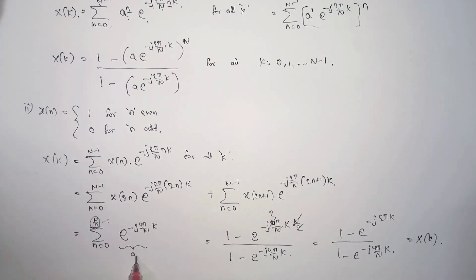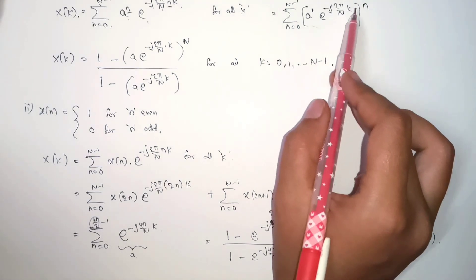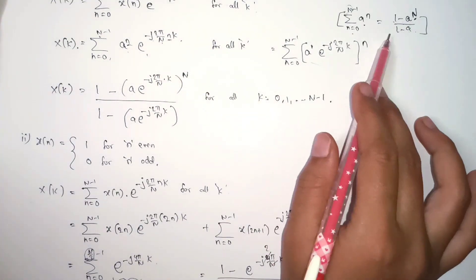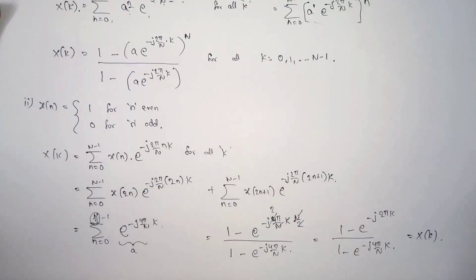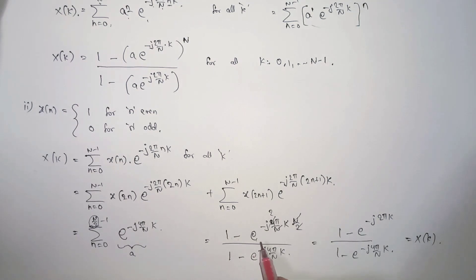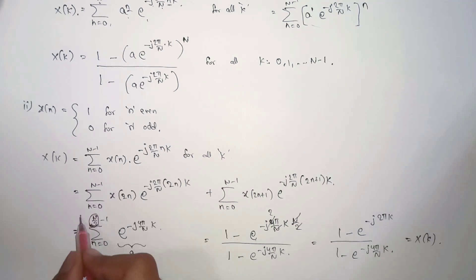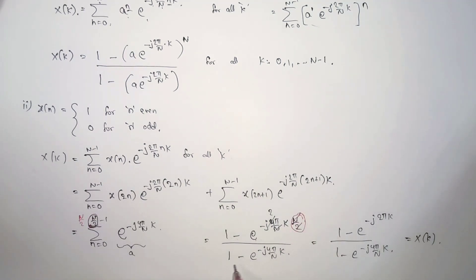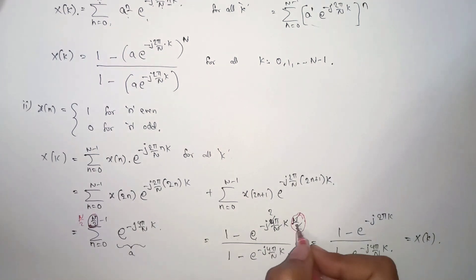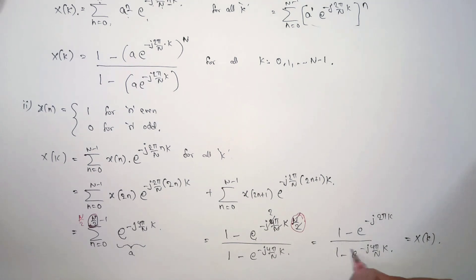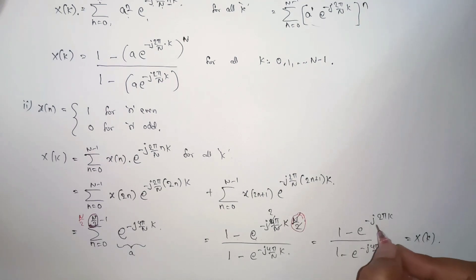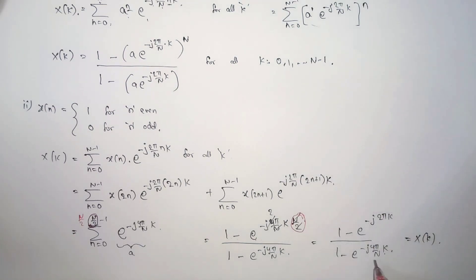Since we considered e to the power of minus j 4π/N times k as a, and the new length is N/2, when N and N cancel and 4 and 2 cancel, we are left with: 1 minus e to the power of minus j 2πk, divided by 1 minus e to the power of minus j 4π/N times k. This is the final Discrete Fourier Transform of the given even/odd signal.